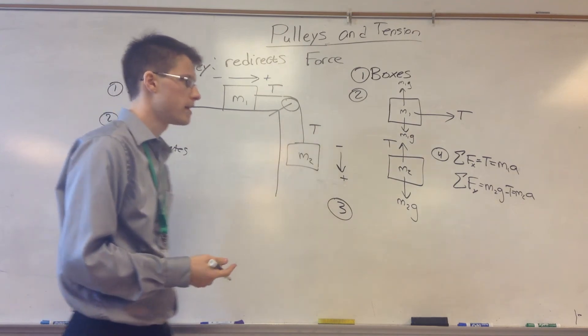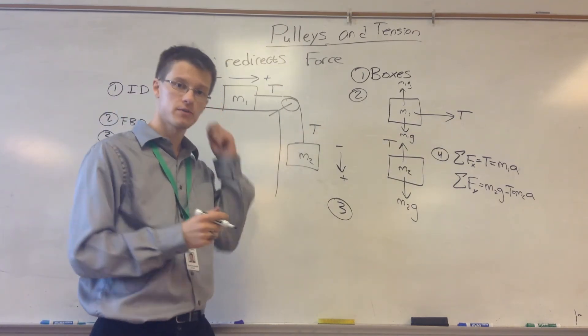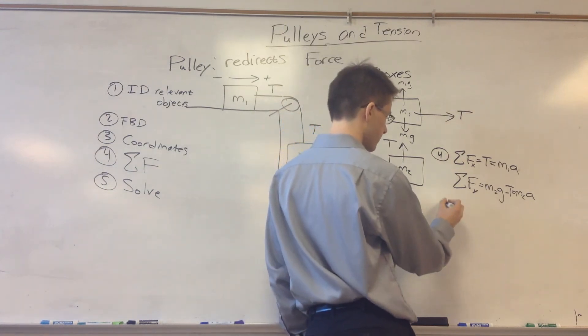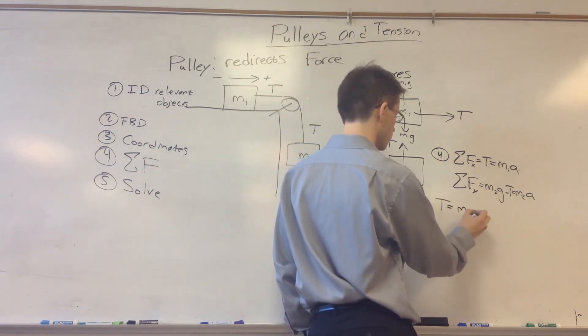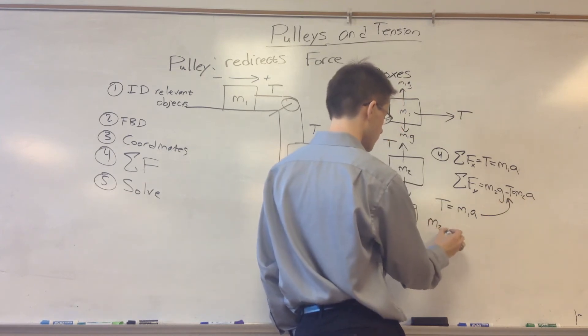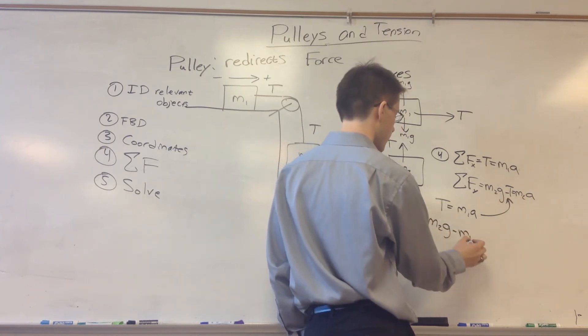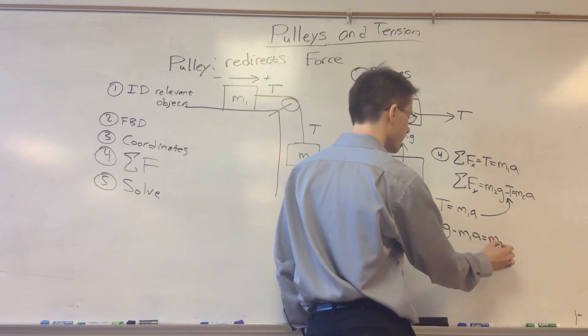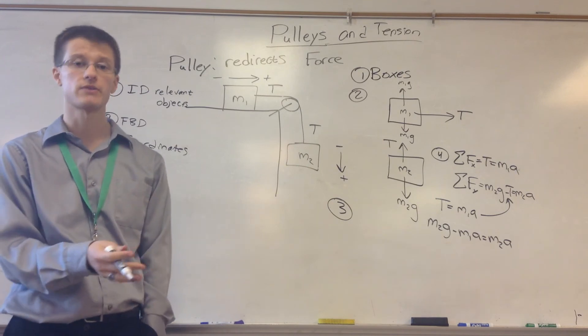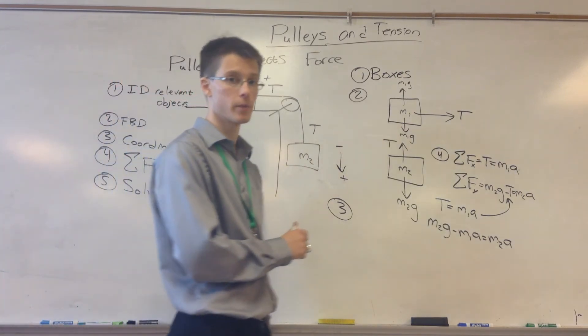From here, we can make our substitutions like we did with past two body problems. Let's say that T is equal to m1a, and we're going to plug this into this equation. So you have m2g minus m1a is equal to m2a. Like every problem, most problems like this, I'm just looking for the acceleration of the system and the tension in the rope. Because I don't know what this tension is. So that's why I'm going to say this is this and plug it in.